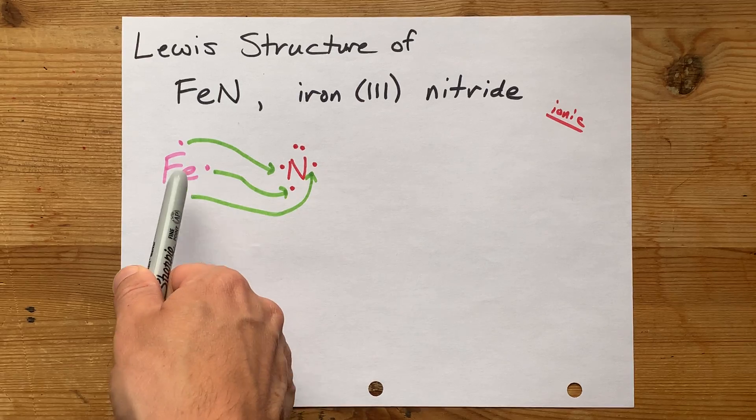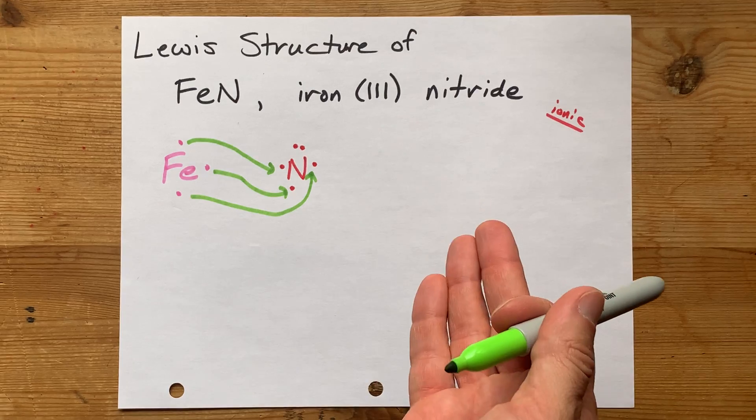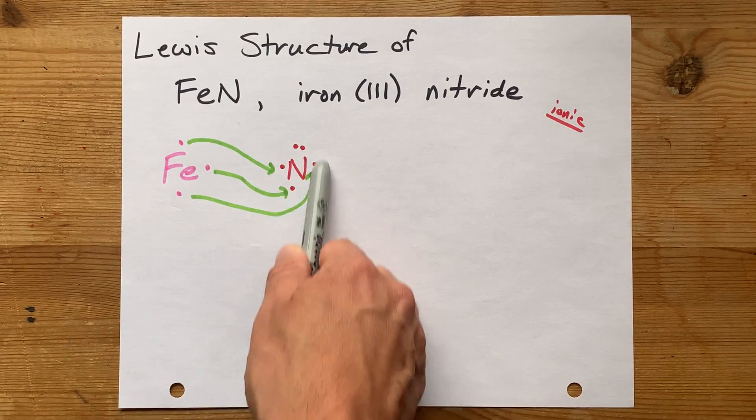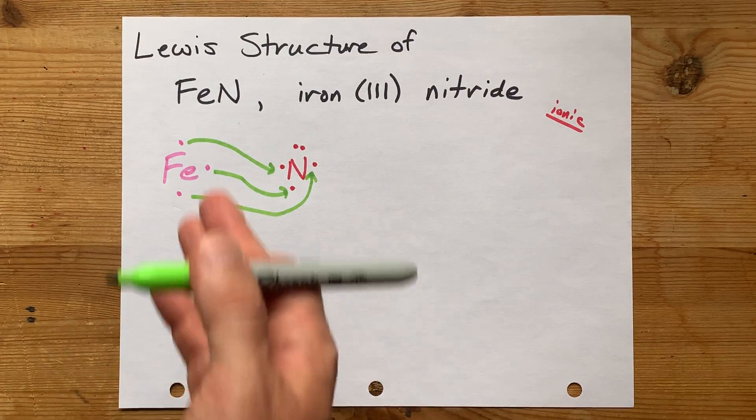That leaves the iron atom empty, which is also a form of stability. At least it's empty in its outer shell, I should say. And nitrogen will have a complete octet in its outer shell, so that makes them both happy.